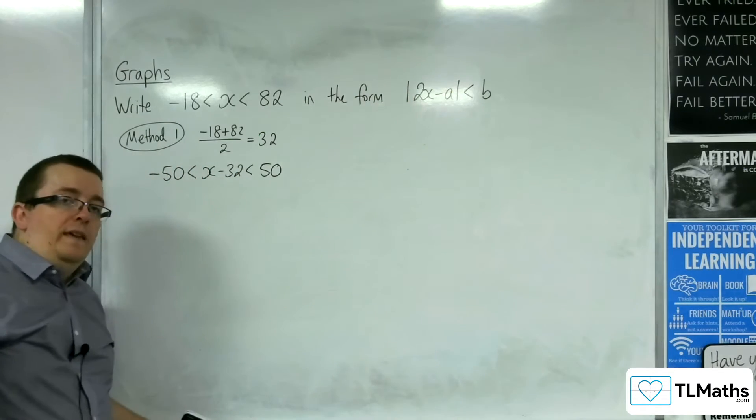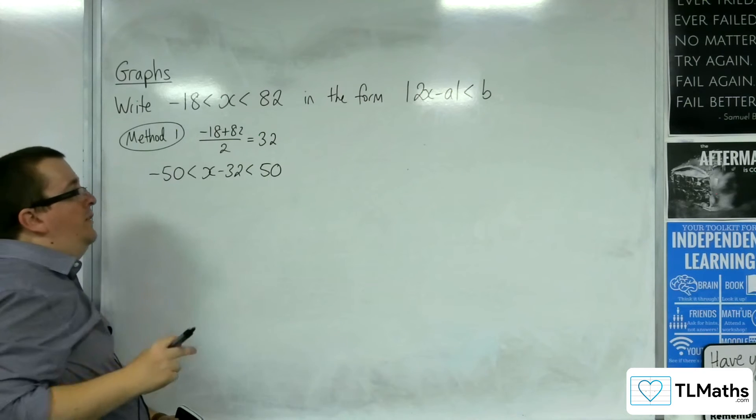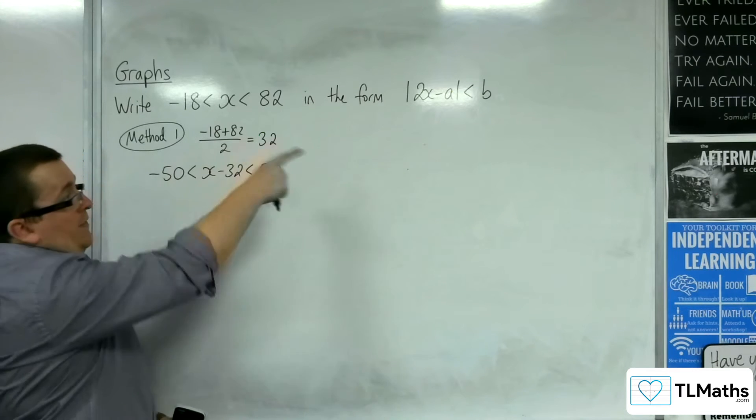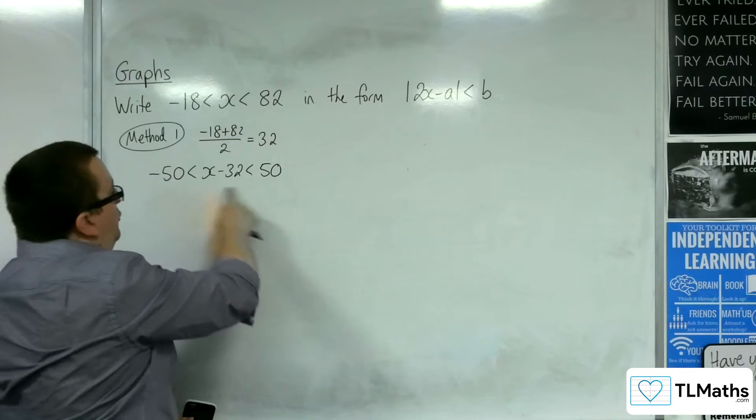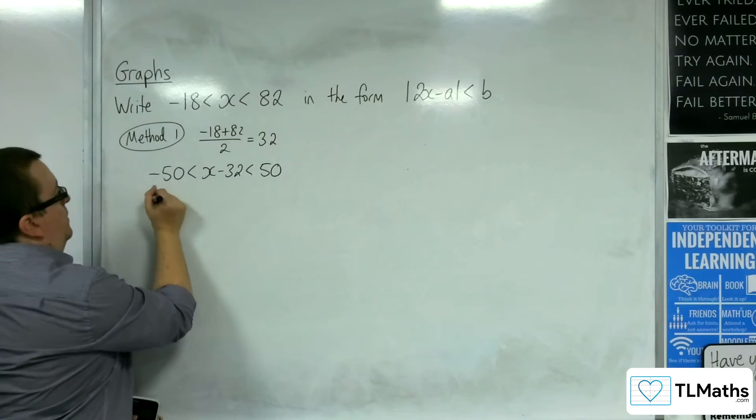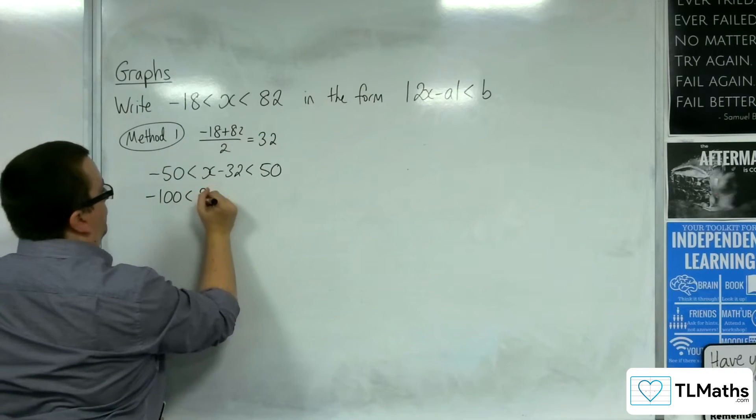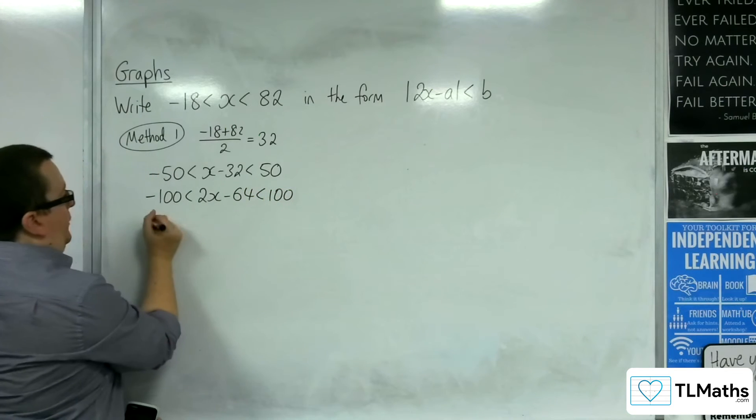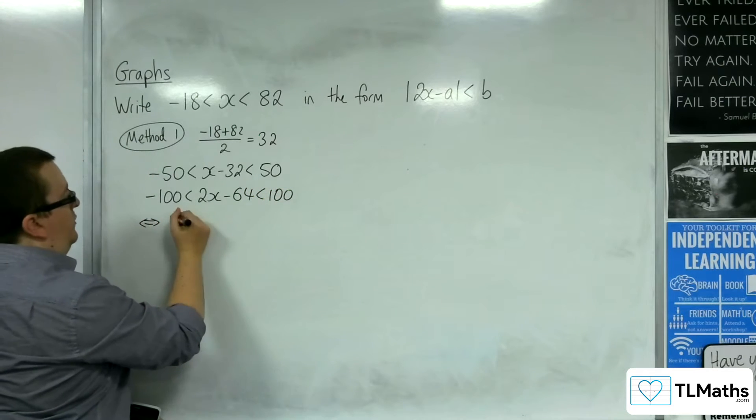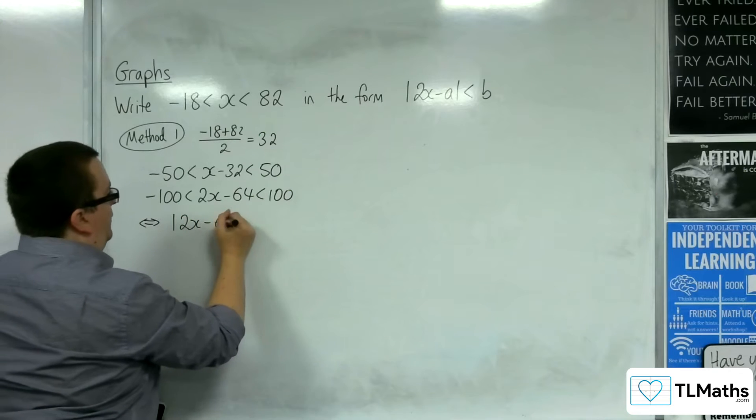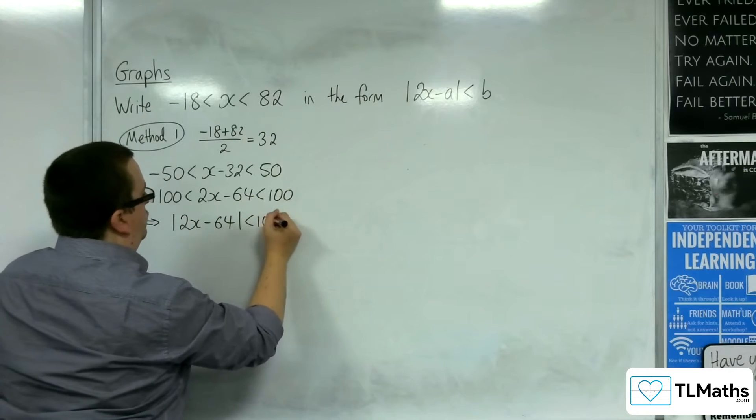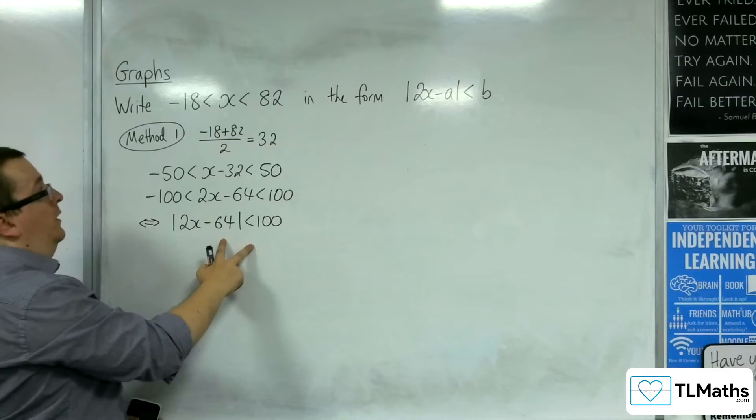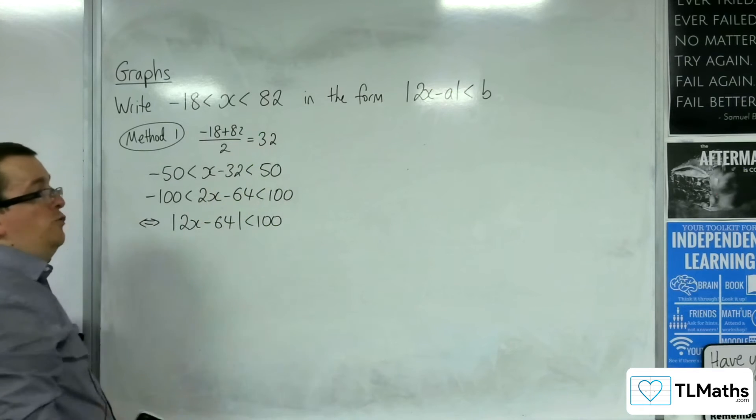It would fit the form of |x - 32| < 50. But because of that 2x that's in there, that won't be the final answer. So to get the 2, I could multiply everything through by 2. And so, this is equivalent to writing down |2x - 64| < 100, and so that solves the original problem in the correct format.